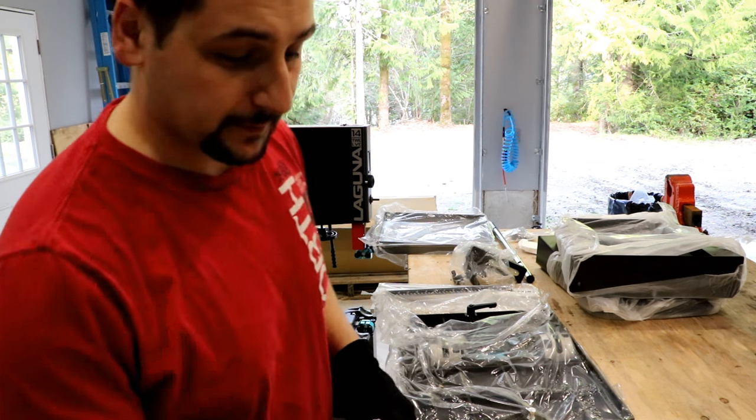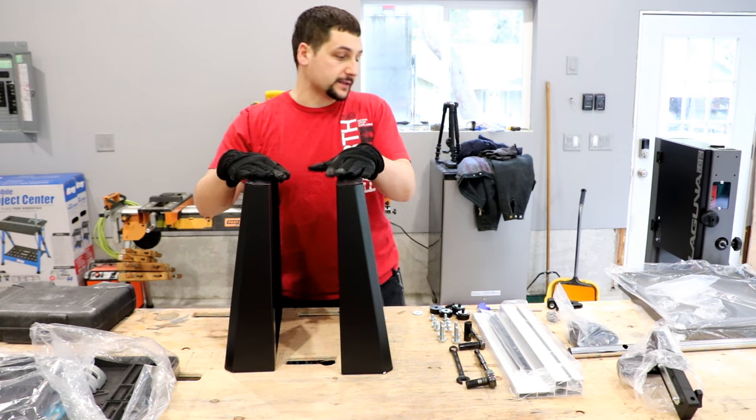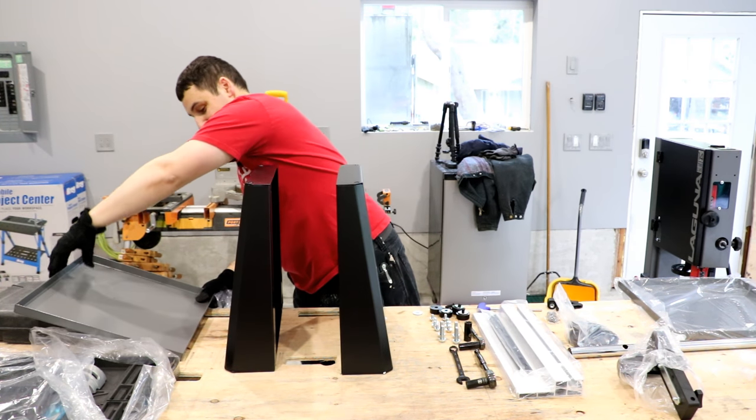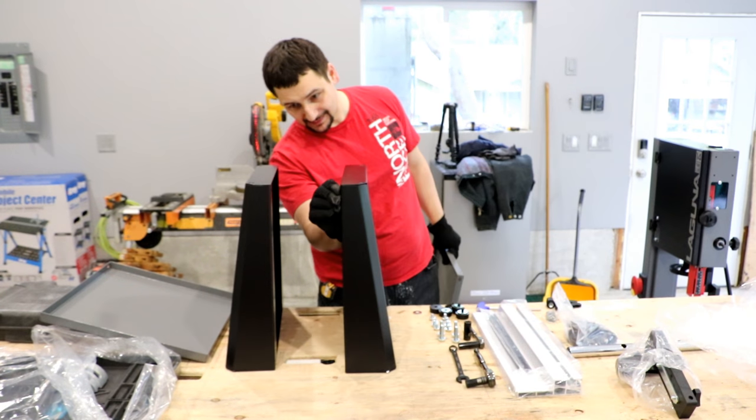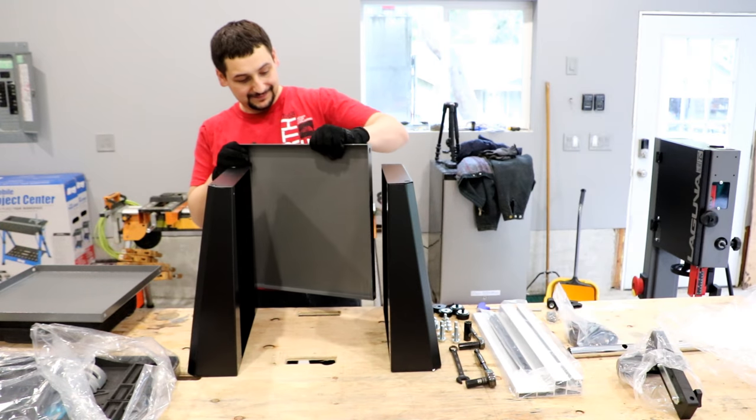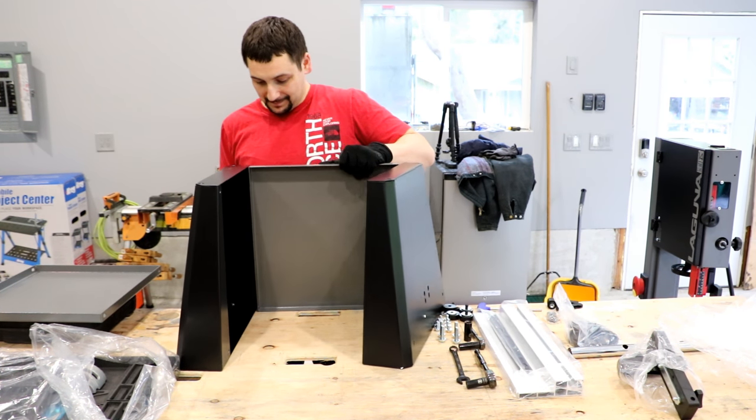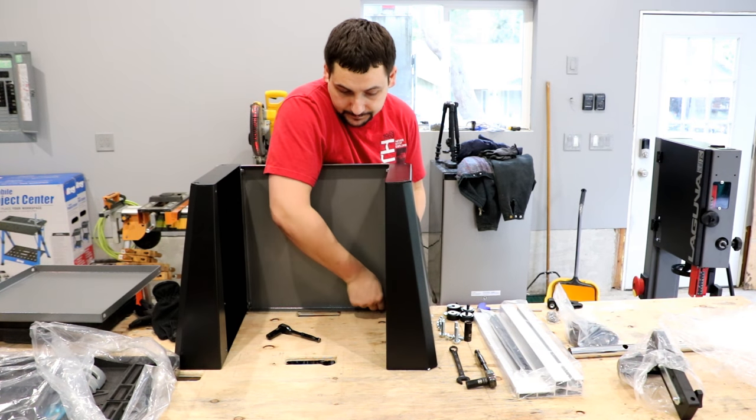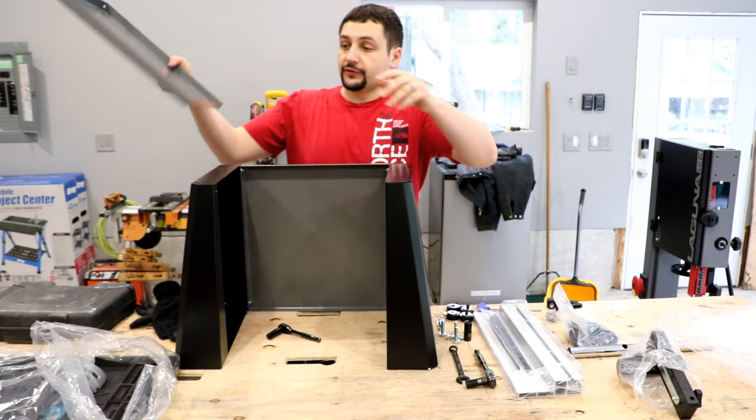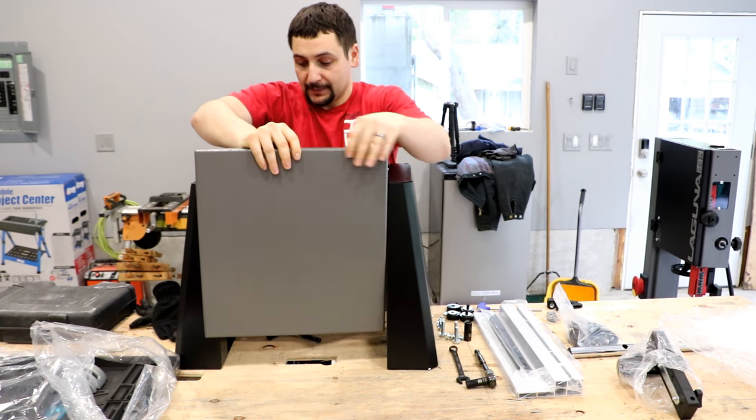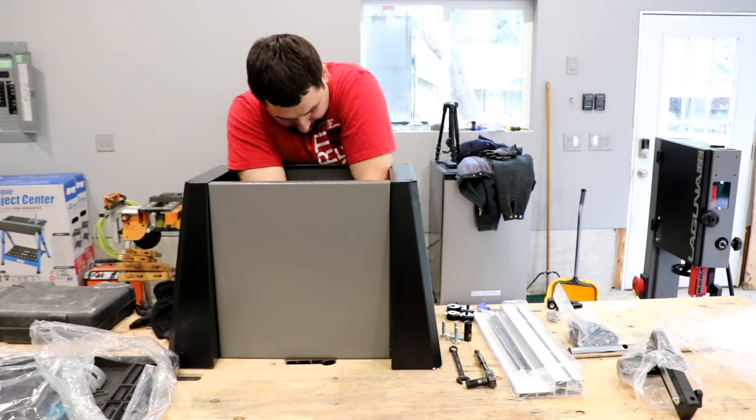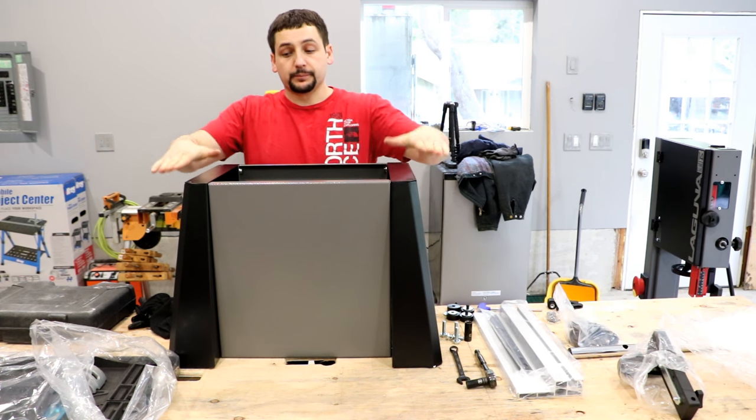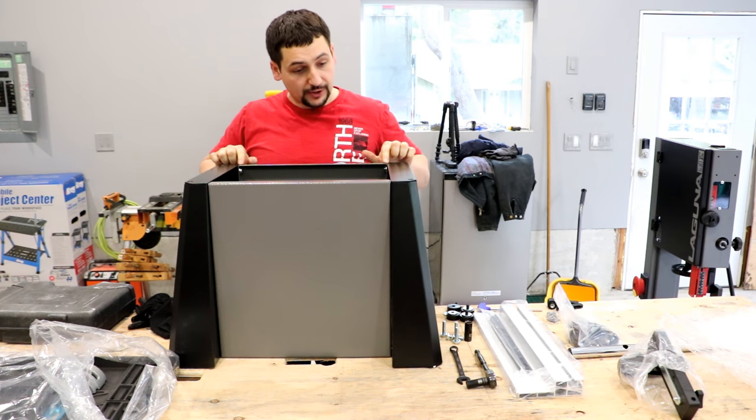We're going to go ahead and get the base put together. We have the front and back plates to the base, and the side plates. The holes in the plates are threaded so there's no nuts required. I'm going to get all eight bolts in, there's four per plate, before I snug them up. You want to make sure that the side plates don't stick up higher than the end plates because the saw won't sit on there flat if you don't validate that.